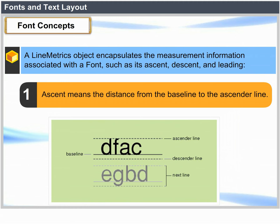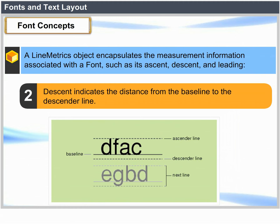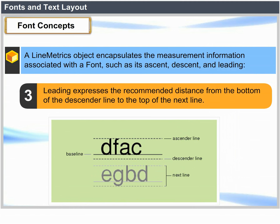Ascent means the distance from the baseline to the ascender line. Descent indicates the distance from the baseline to the descender line. Leading expresses the recommended distance from the bottom of the descender line to the top of the next line.